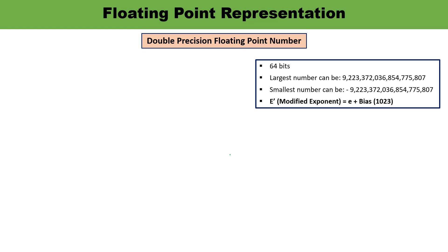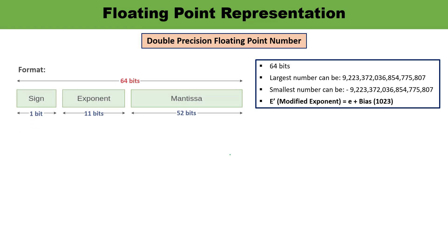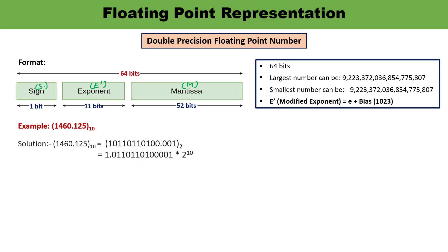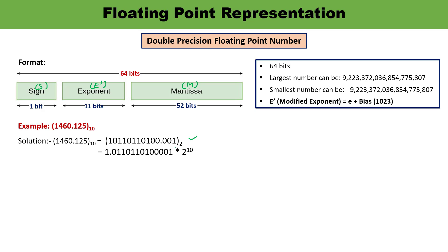Now let us discuss the double precision floating point number, which is 64 bits. Out of 64 bits, the mantissa is 52 bits (bits 0–51), the modified exponent is 11 bits, and the sign is 1 bit. Using the same example: the decimal number is converted to binary, then normalized to 1.0110110101 × 2^10. The sign S = 0 (positive), exponent E = 10, and the mantissa is the digits after the decimal point.